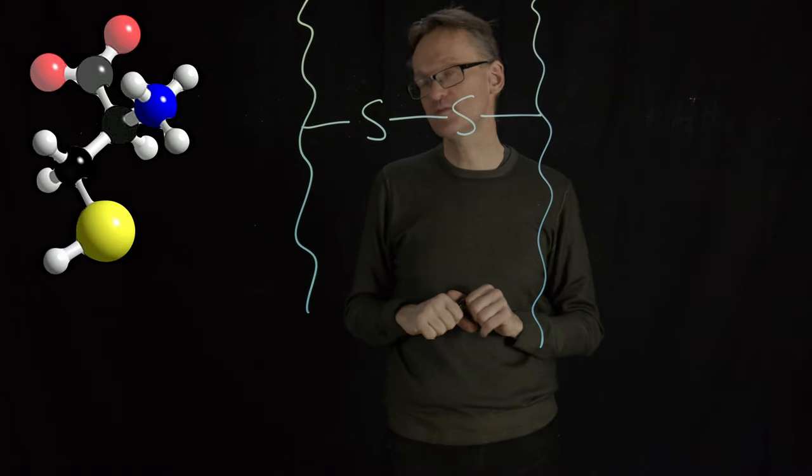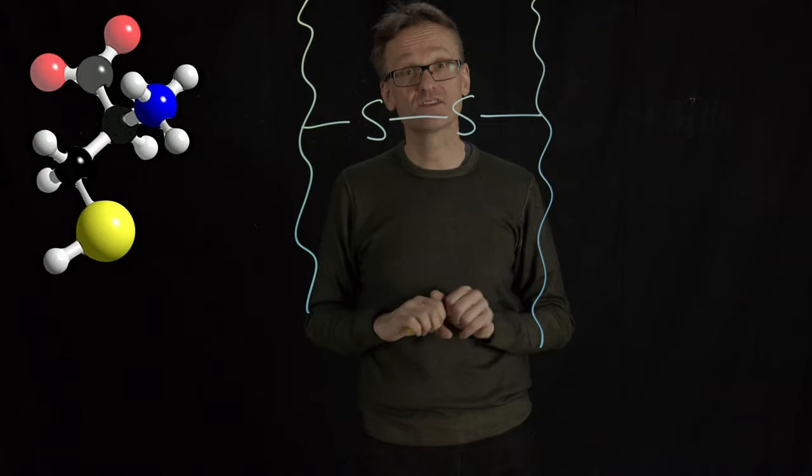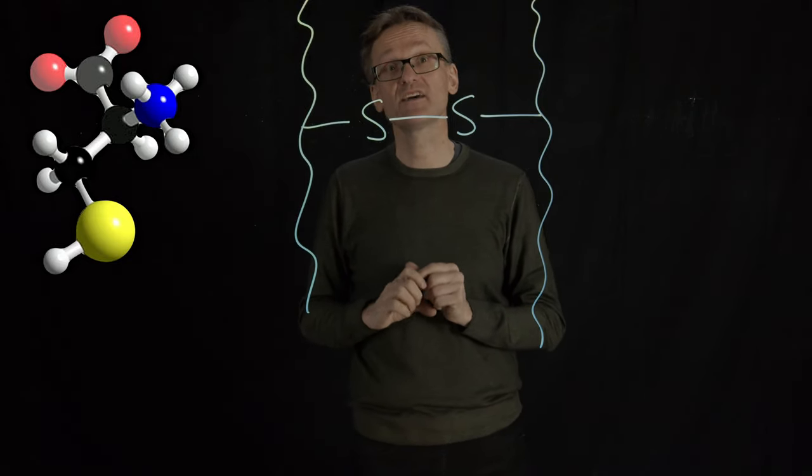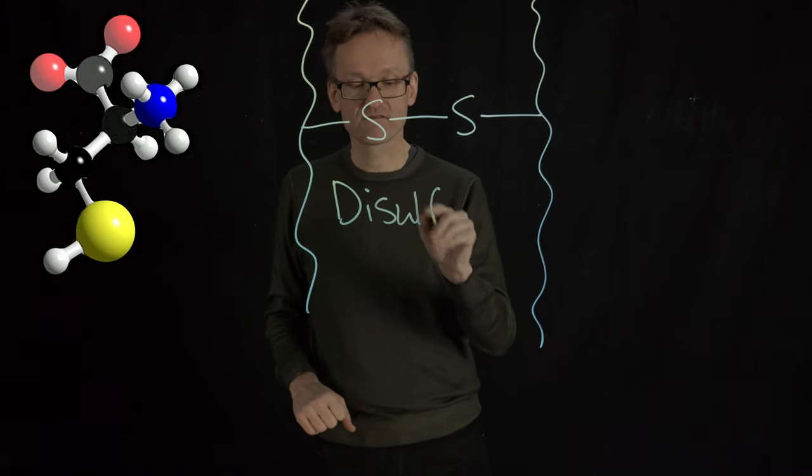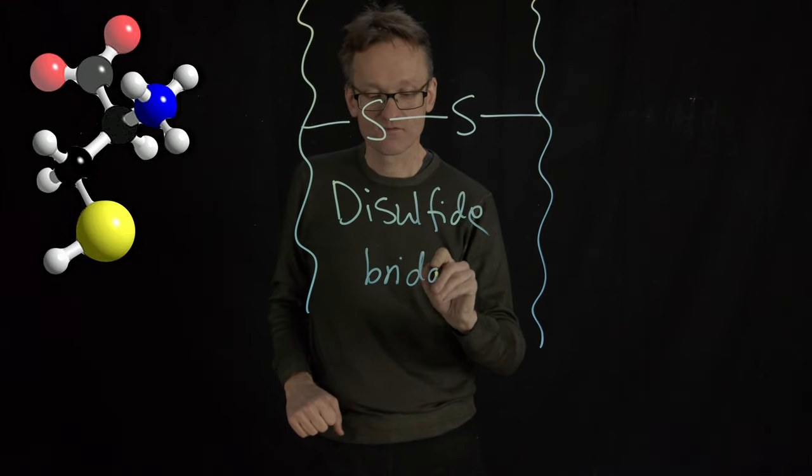This turns out to be what happened to Christian Anfinsen when those ribonuclease formed incorrect structures. So in the correct structures we would have these so-called disulfide bridges formed in the right place.